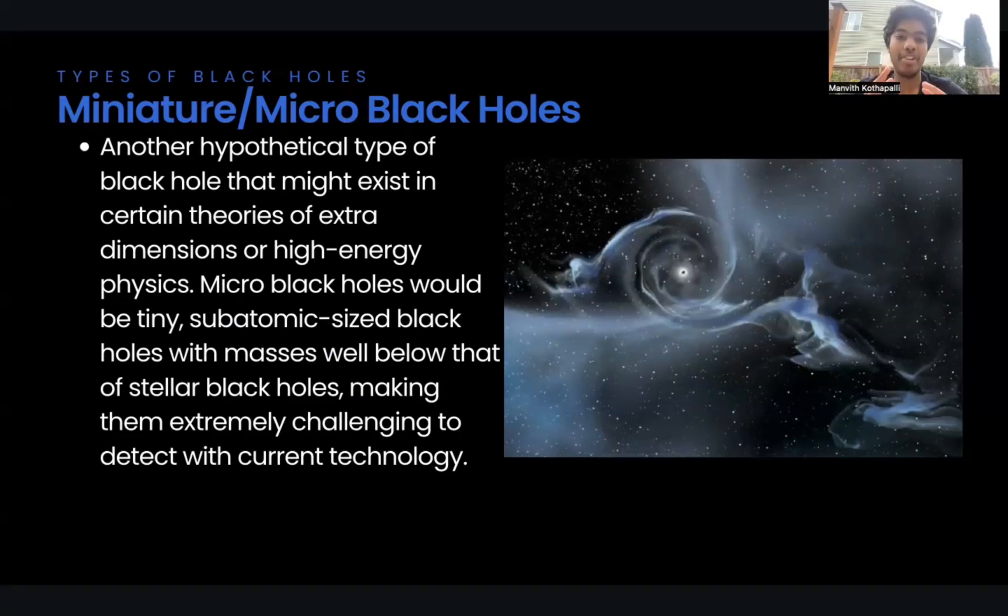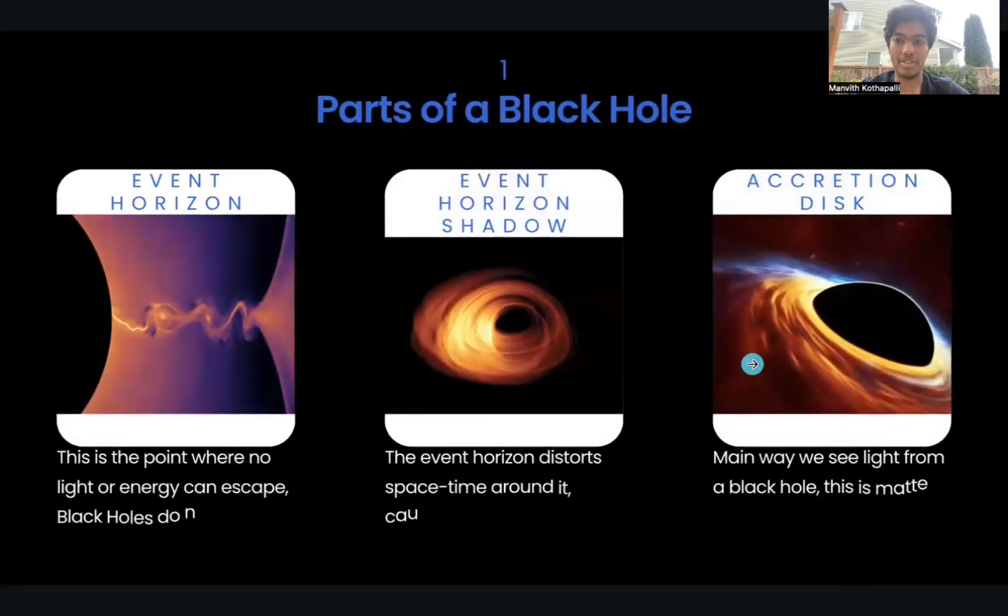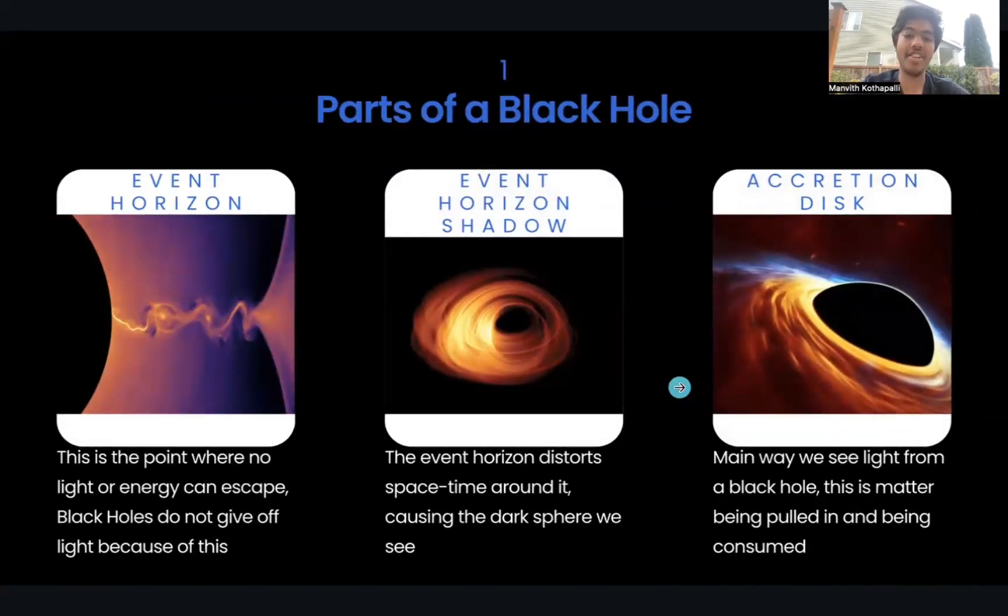Before we talk about that, we technically have created a micro black hole, it's just that we haven't detected it in nature. So now let's talk about the parts of the black hole. Let's talk about the event horizon first. This is the point of no return where matter and or energy that enters this can never get out again. This is basically the surface of the black hole. Beyond this point, it's impossible to know what goes on inside. As no information, not even light, can escape the event horizon. And Banu will be talking about the event horizon shadow.